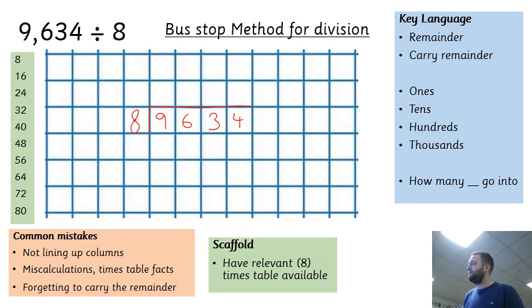The language I try to encourage children to use is 'how many of that number go into that number.' Once they get their head around that—if I've got nine, how many eights go into nine—that helps them access this and do each step of the calculation. You could say what's nine divided by eight, but I think the idea of 'how many eights go into nine' helps them understand that one eight can fit and one will be left over.